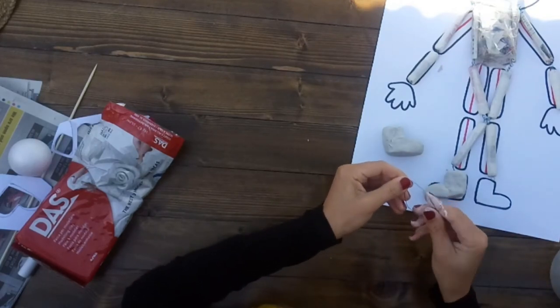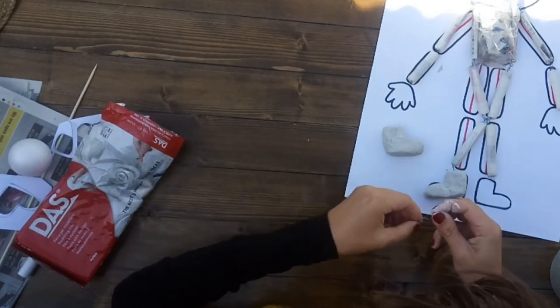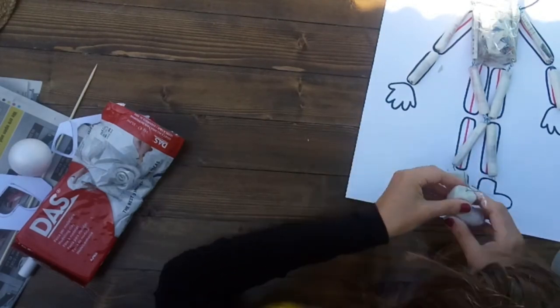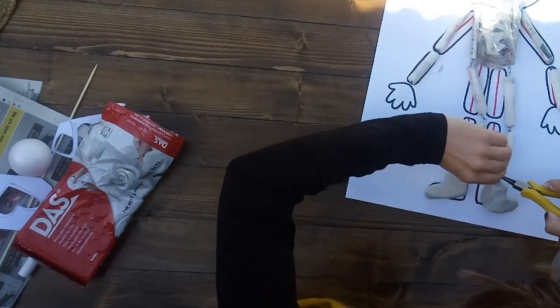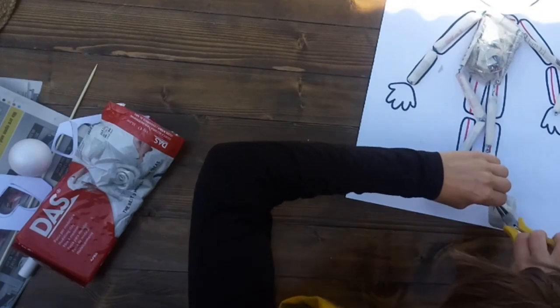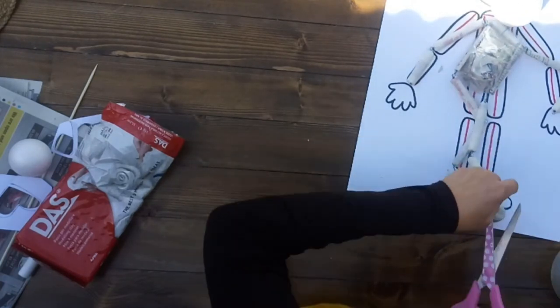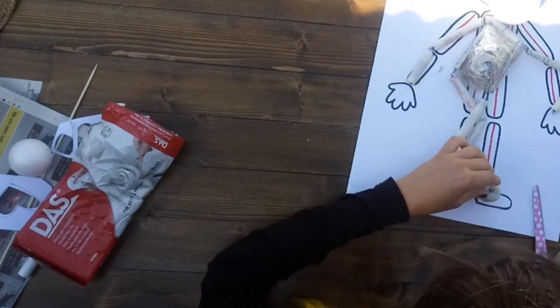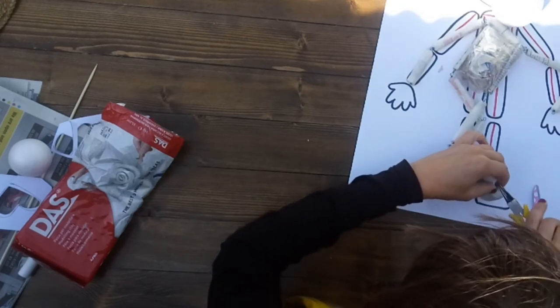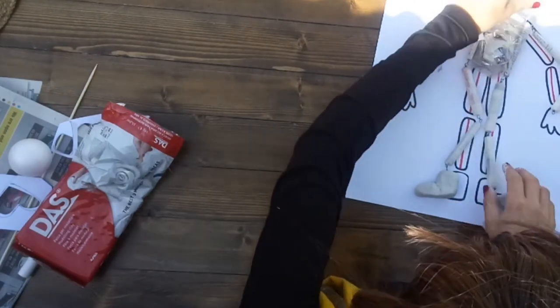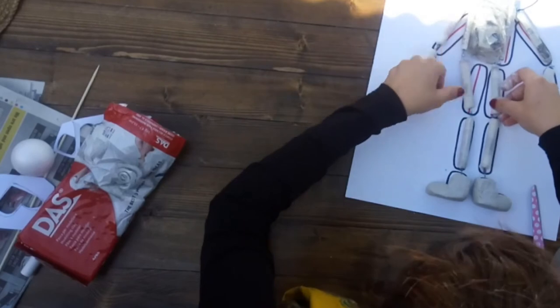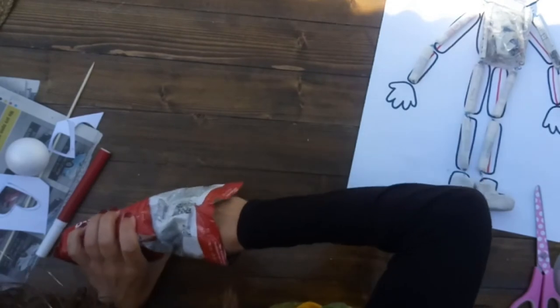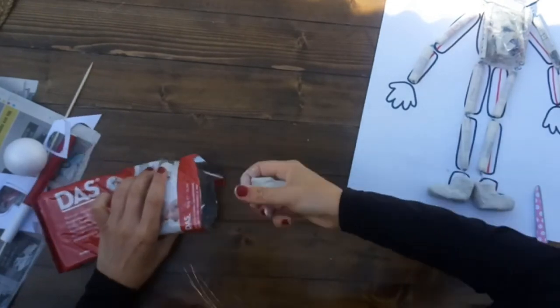So we just repeat the process then of attaching the other foot. Now we just let those feet dry for a couple of days. You'll know it's dry when it starts turning bright white. It should be about three or four days. We'll keep it somewhere warm and dry.